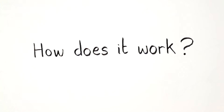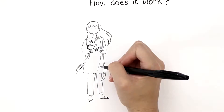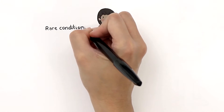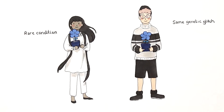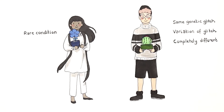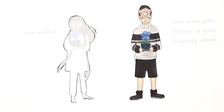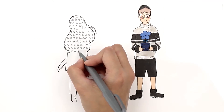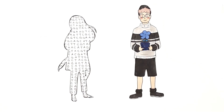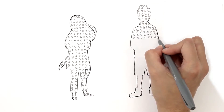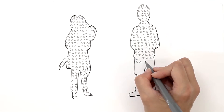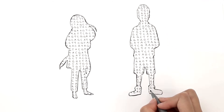So how does it work? Meet Lily. She has a rare condition. It could be caused by the same genetic glitch as Jack, who has the same symptoms, or it could be a variation of that glitch, or even something completely different. First, they start with a readout of all three billion letters of Lily's genetic code, which takes a few days. Because humans are 99.8% the same, they only need to look in the four million places where Lily is different.